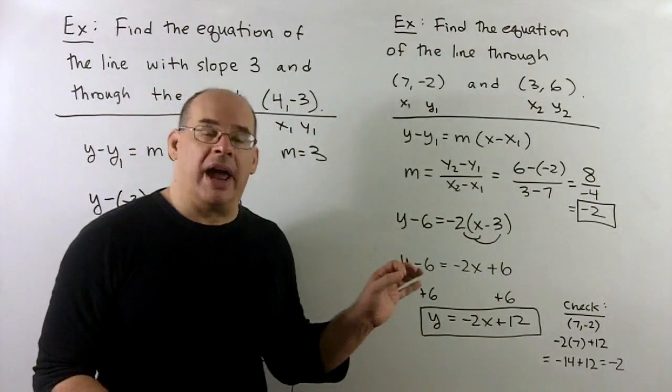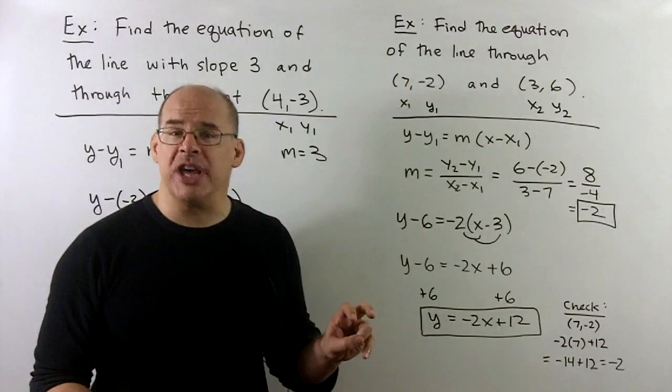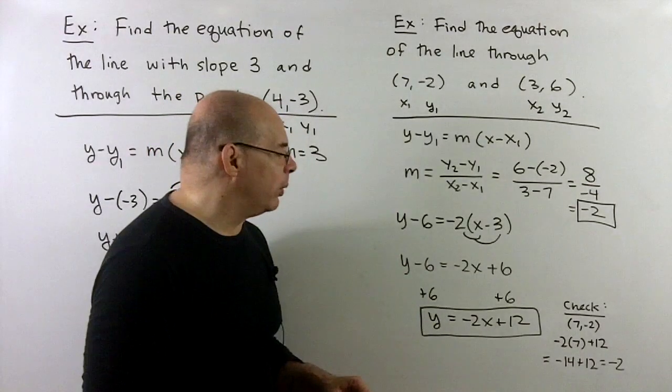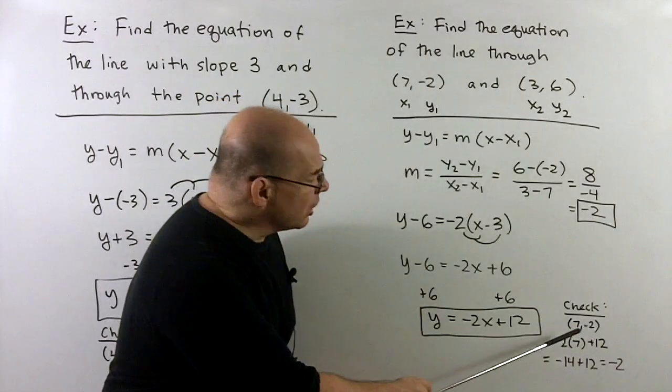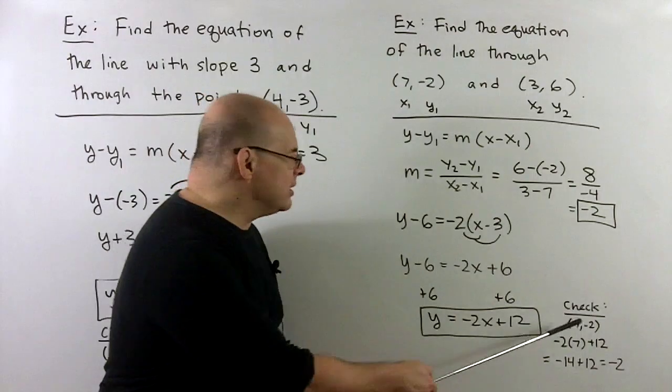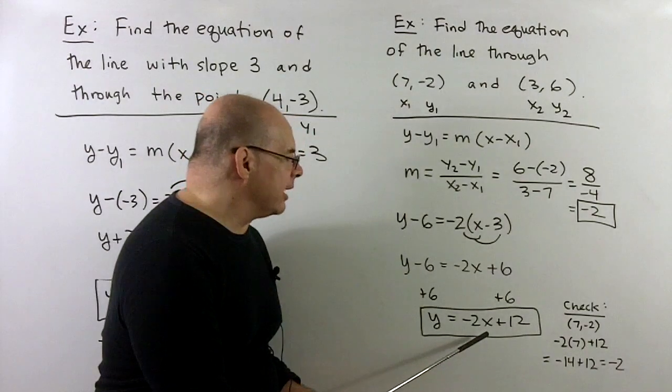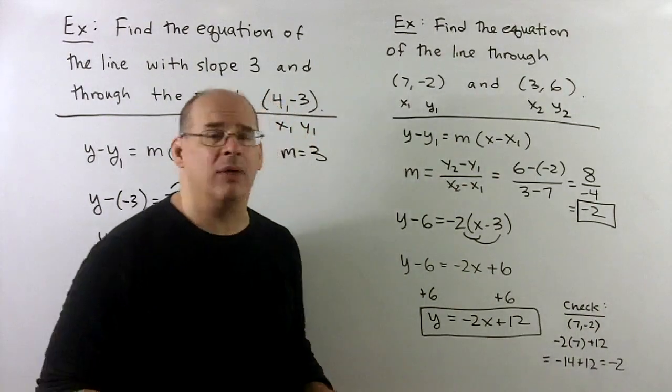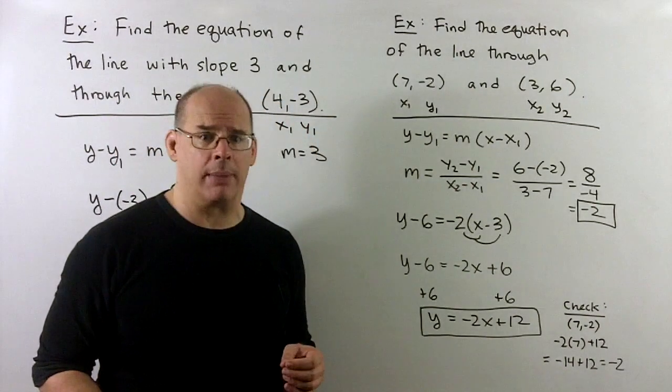Again, we'll check our answer. Here you can do a strong check by putting both points into the equation, but we'll just do it for the other point that we didn't use. So if I check (7, -2), that means if I put 7 in for x, we better get a minus 2 out. And then that's going to give us a minus 14 plus 12, which is a minus 2 as promised.